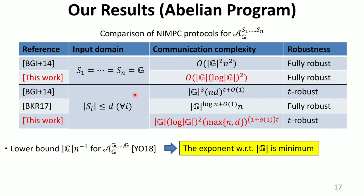Now we show the details of our results. First, for the case where input domains are all G, we propose a fully robust NIMC protocol whose communication complexity improves the best-known result. Because of the lower bound, the complexity cannot be sublinear in the size of G, so the exponent of our result is minimum. We also consider the case where input domains are strict subsets, and propose a T-robust NIMC protocol whose communication complexity again improves the best-known results in terms of the size of G.